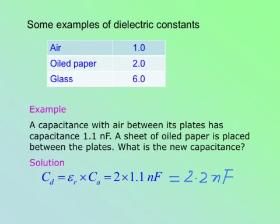Some examples of dielectric constants. Air is 1, that's the standard. Oil paper is 2. Glass is 6. In other words, if you use oil paper as a dielectric, then the capacitance of the capacitor will increase two times compared to just air. With glass, it will increase by six times.